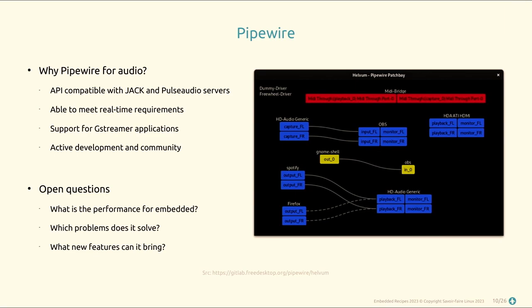Why use PipeWire for audio if it wasn't designed for it? With time, audio support was integrated very well. It's API-compatible with both JACK and PulseAudio, meaning you can replace either sound server with PipeWire while keeping the same applications running. It can meet real-time requirements, has GStreamer support — important in the embedded world — and has a very active development community. PipeWire went from no Bluetooth support to the best Bluetooth audio support on Linux in just a few months.